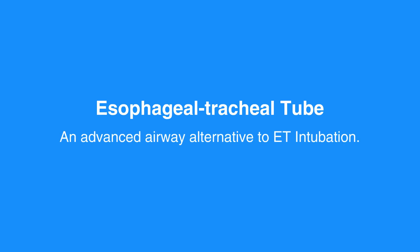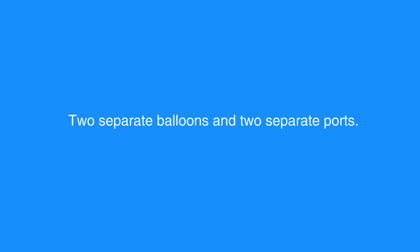The esophageal tracheal tube, which is sometimes referred to as a COMBA tube, is an advanced airway alternative to ET intubation. This device provides adequate ventilation comparable to an ET tube. The COMBA tube has two separate balloons that must be inflated and two separate ports. As a provider, you must correctly determine which port to ventilate through to provide adequate oxygenation.